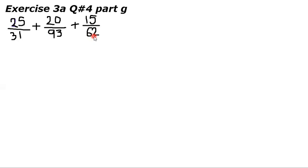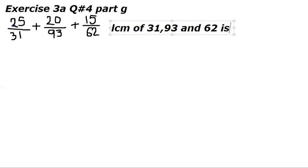If you don't know how to take the LCM you should watch my videos of chapter 2 in which we have done a lot of questions and exercises to find the LCM of two numbers and three numbers. So here I will just write that LCM of 31, 93 and 62 is 186. We have to make the denominators equivalent to 186.